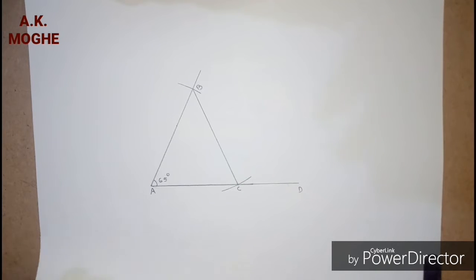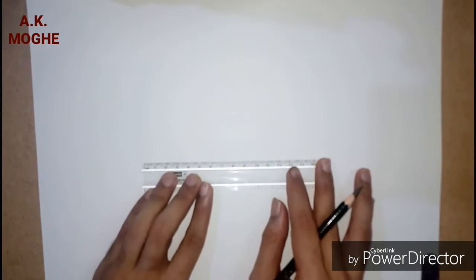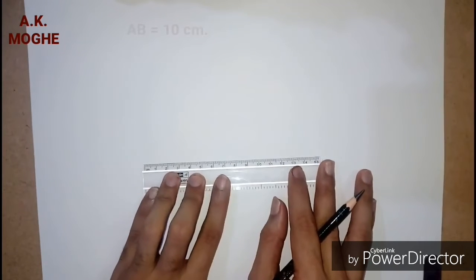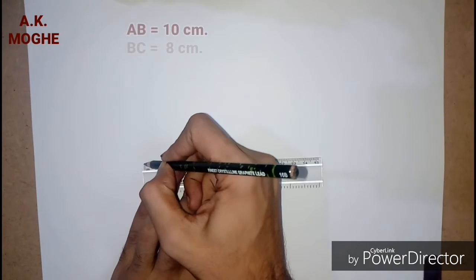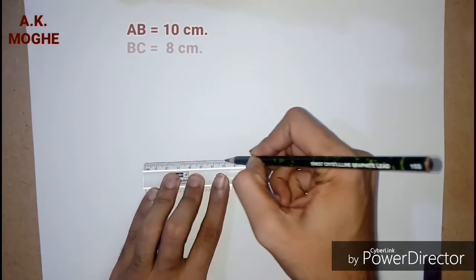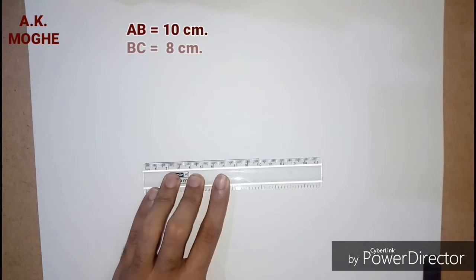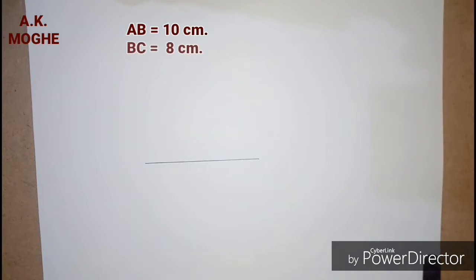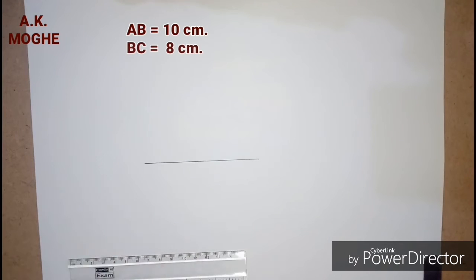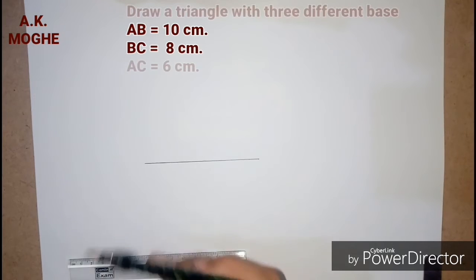The last problem is how to draw an uneven side triangle with three different sides. The three sides are AB equal to 10 centimeter, BC equal to 8 centimeter, and CA equal to 6 centimeter. Most preferably, the larger side has to be taken as the base of the triangle.